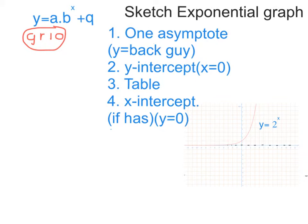We will use four steps to sketch this exponential graph. First, you work out that there is one asymptote, y equals to q. Then number two, we work out the y-intercept by making x naught. Then we will use a table to find one or two more coordinates. Then we will work out the x-intercept if it has an x-intercept by making y naught.